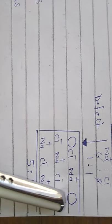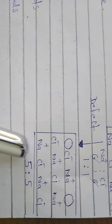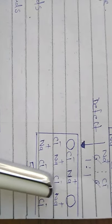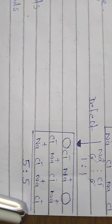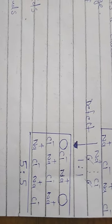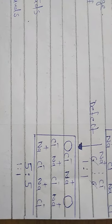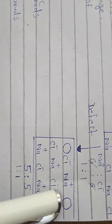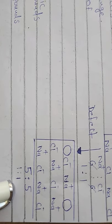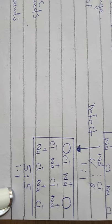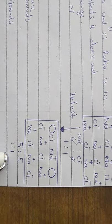In the defective crystal we have Na⁺ and Cl⁻ missing from certain positions, but the ratio of 5:5 simplifies to 1:1, same as the perfect crystal. So the stoichiometry is not disturbed, and this is why it is called a stoichiometric point defect.